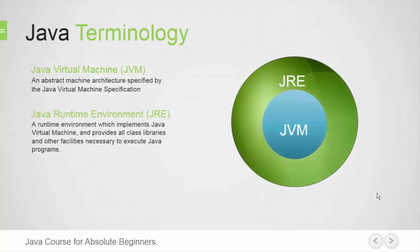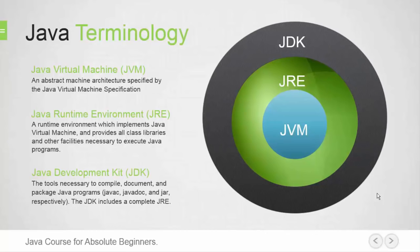Second: what exactly is the Java Runtime Environment (JRE)? JRE provides the minimum requirements for executing a Java application. It consists of the Java Virtual Machine, core classes, and supporting files. JRE doesn't contain any development tools like the Java Compiler or Debugger. Third: what exactly is the Java Development Kit (JDK)? JDK is the core component of the Java environment and provides all the tools, executables, and binaries required to compile, debug, and execute a Java program. JDK is platform-specific software, so we have separate installers for Windows, Mac, and Unix systems. We can say that JDK is a superset of JRE, since it contains JRE with the Java Compiler, Debugger, and core classes.